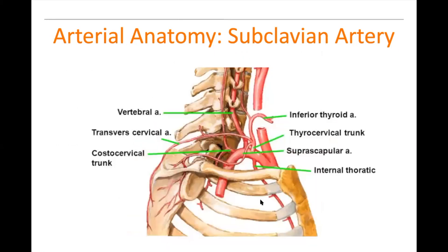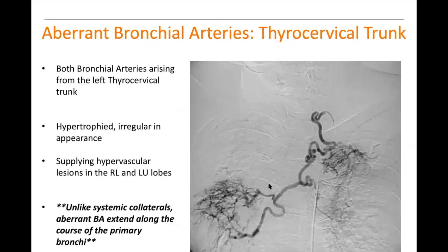Another view shows the internal thoracic, thyrocervical trunk, and vertebral artery. The bronchial artery can come off the costocervical trunk — pretty much anywhere along that vessel tree. Back to the thyrocervical trunk image: you can see the clavicle up here, so we're definitely not coming off the aorta. This is the left thyrocervical trunk giving rise to hypertrophied, irregular vessels for both sides.